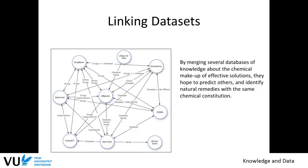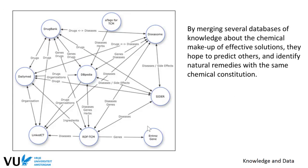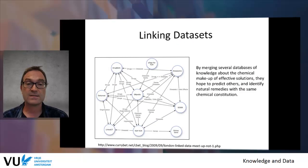The datasets are linked nowadays, or several of them are. I took a snapshot from a 2009 linked data meetup presentation where you can see that there were already several datasets such as DrugBank, disease datasets, gene datasets, and DBpedia — all combined — where databases about chemicals, pharmaceutical information, and clinical information are all linked to each other. This was mostly about drugs, but the same picture holds on the clinical side. They were merging several databases of knowledge about the chemical makeup of effective solutions in order to look into natural remedies.